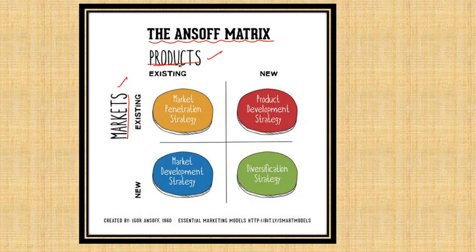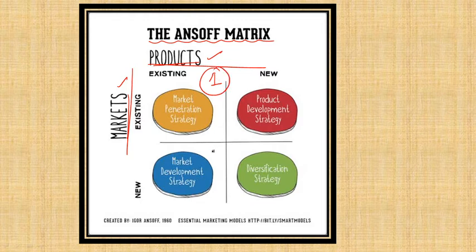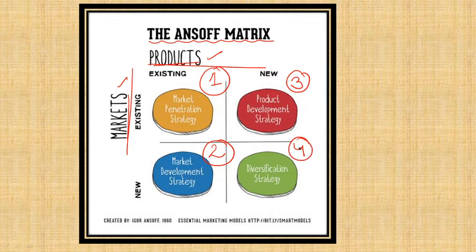On the horizontal axis I have taken products, and on the vertical axis I have taken markets. The first quadrant is the Market Penetration Strategy, the second is the Market Development Strategy, the third is the Product Development Strategy, and the fourth is Diversification Strategy. We will cover each of these in detail with examples.